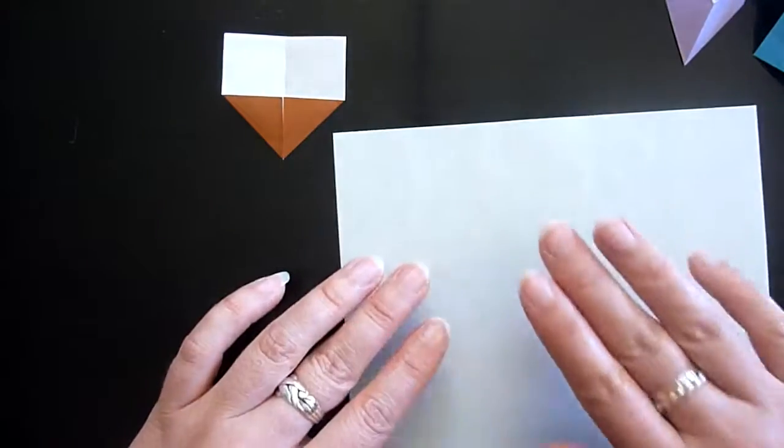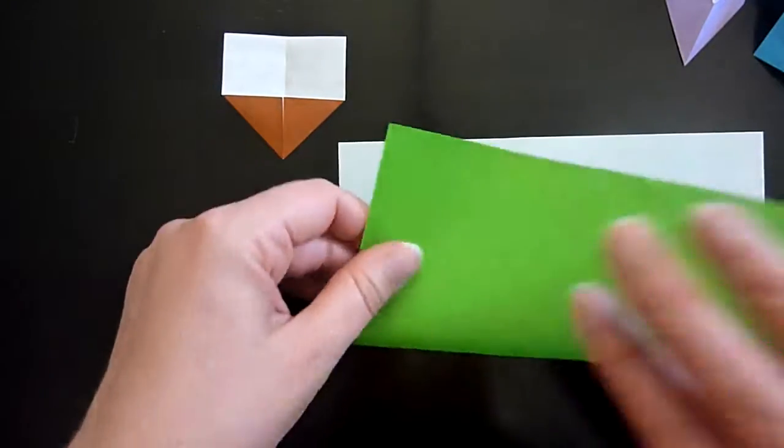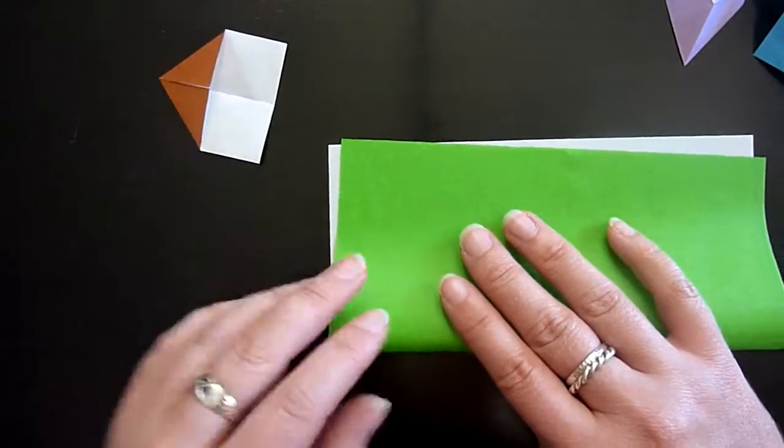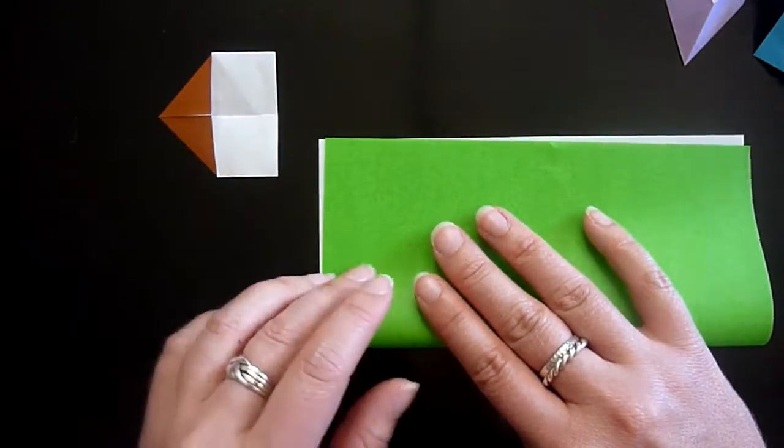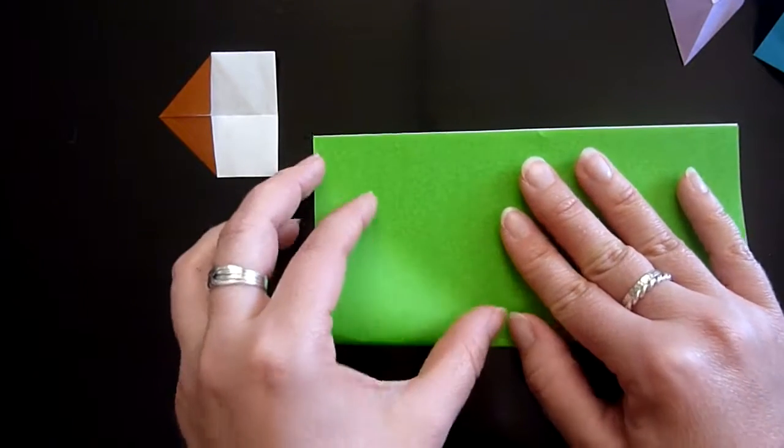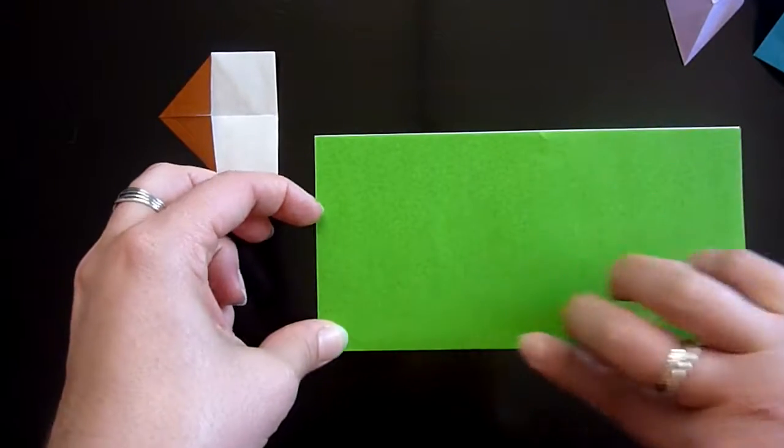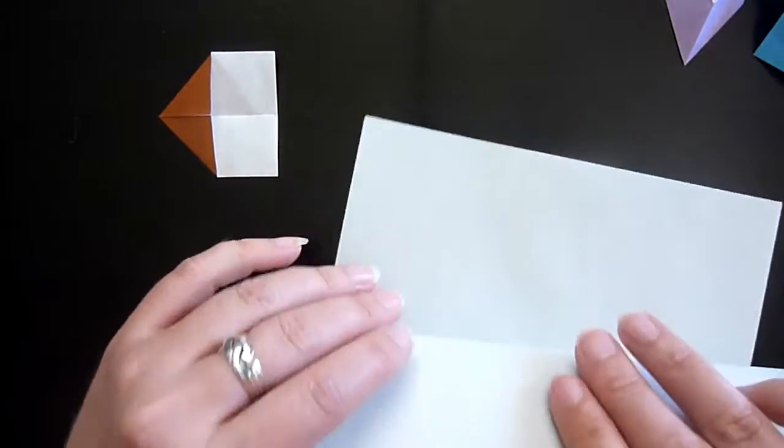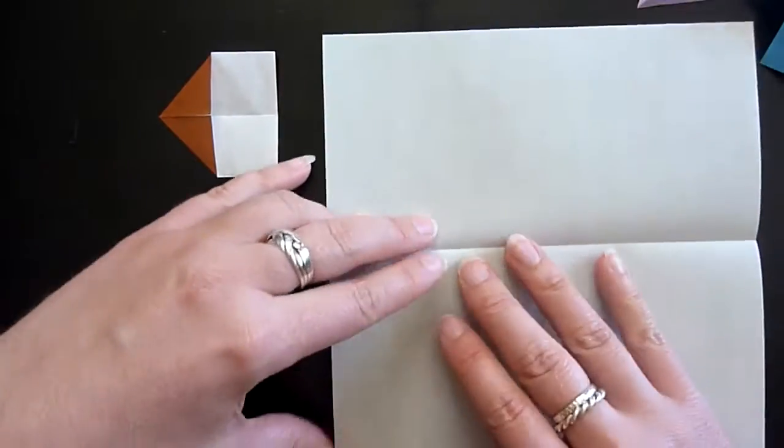Start with your color side face down, fold in half and on one side only bring the corners into the center.